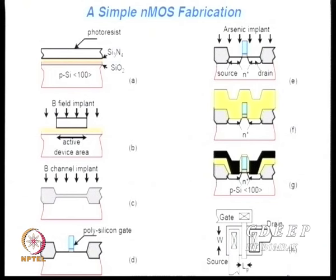To give an idea of fabrication details, which this course will address: we start with a semiconductor — in this case, making an N-channel device, so we start with P-silicon, then grow silicon dioxide by oxidation, then deposit silicon nitride, over which we have a photoresist.